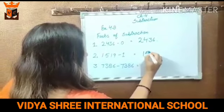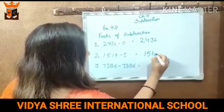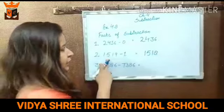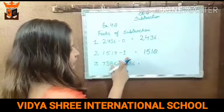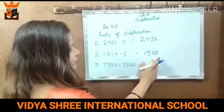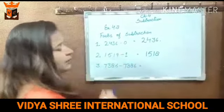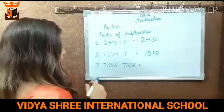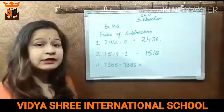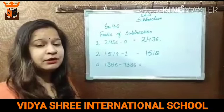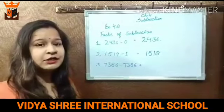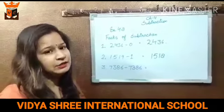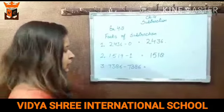For example, the number is 1519. Jab hum isme se 1 minus kiya, to 1518 mila — that is its predecessor. Third fact is: when we subtract any number from the same given number, we get 0 as a result.